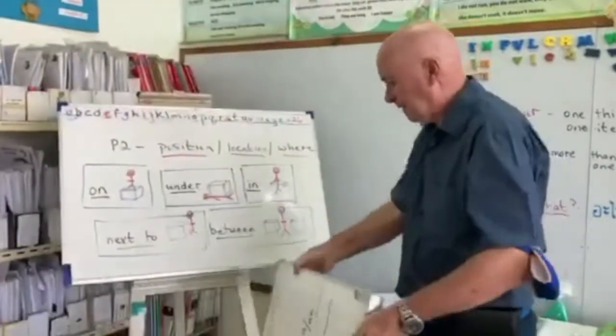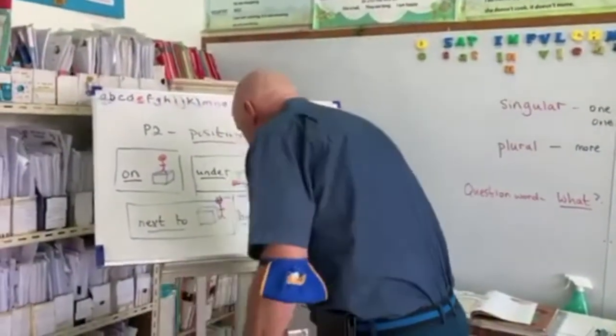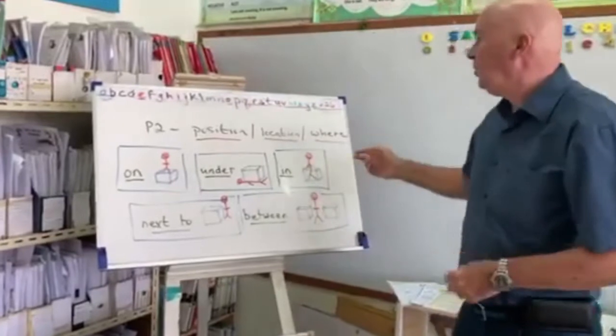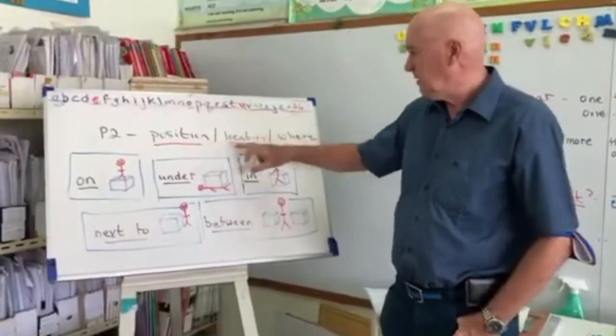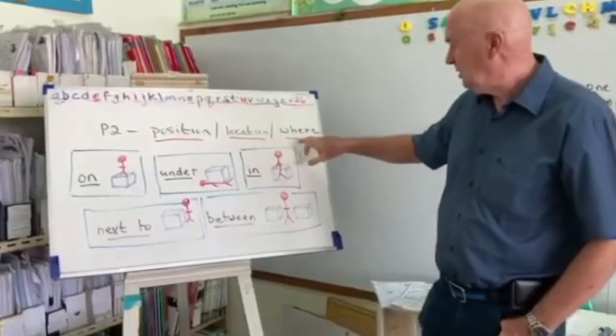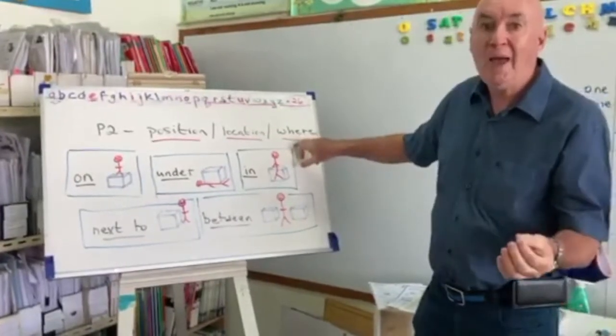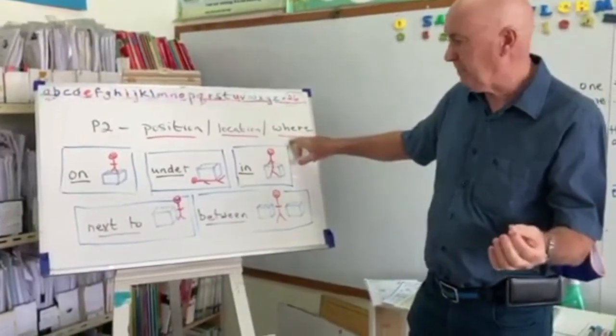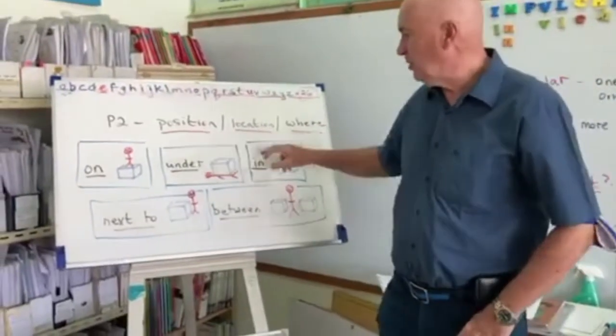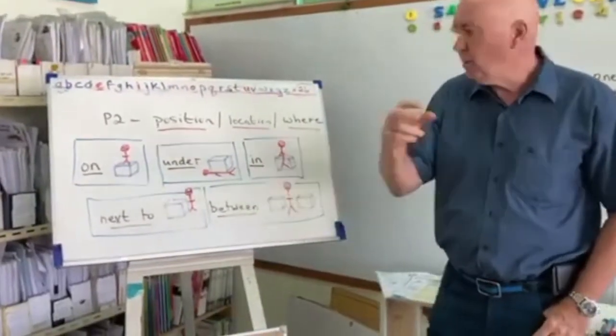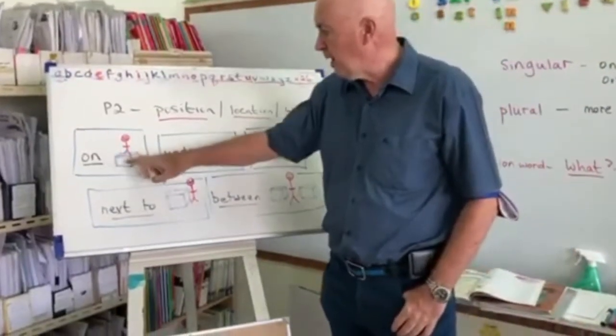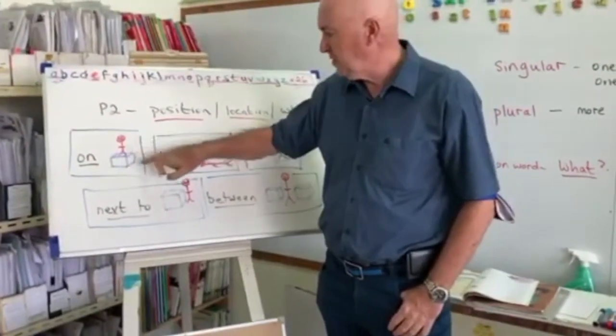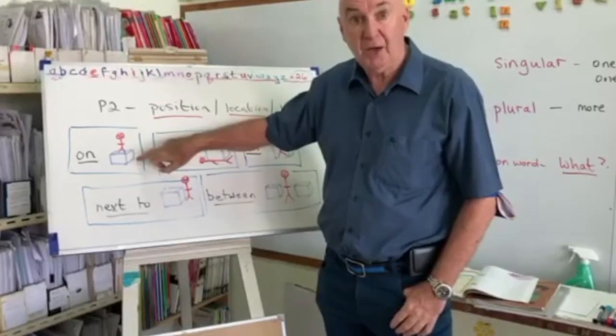we're going to look at position, location. All that means is where is something. And these were the words we've used to say where something is. Can you remember them? On. There's teacher Alan. On the box. On.